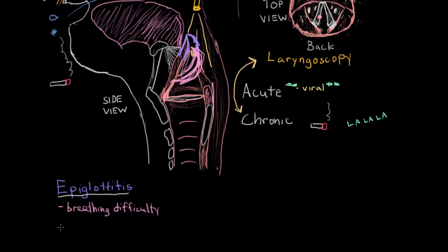Patients with epiglottitis may also have difficulty swallowing, which can lead to drooling because they are unable to swallow the saliva they're producing — this can help differentiate epiglottitis from laryngitis. Another difference is that in epiglottitis there is no coughing, because the epiglottis lacks the cough receptors found in the larynx and vocal cords, so patients tend not to cough much.